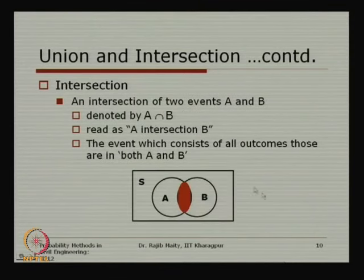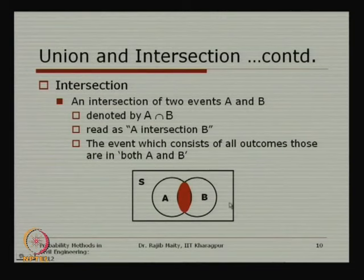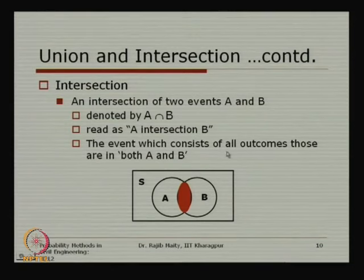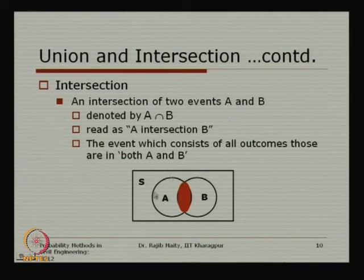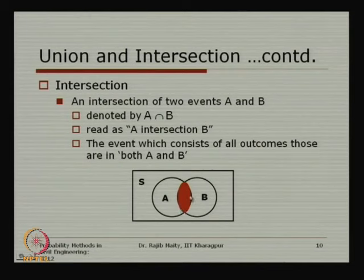The intersection, denoted as A ∩ B, is defined as all outcomes that are in both A and B — it must be in both. So the red highlighted overlapping area in the Venn diagram is the intersection between A and B. In summary, union is the total area consisting of either A or B or both, while intersection means it is in both A and B.